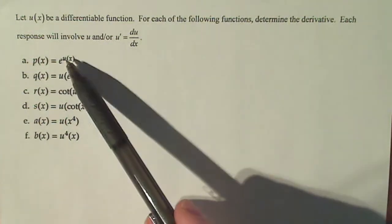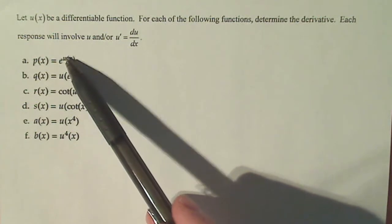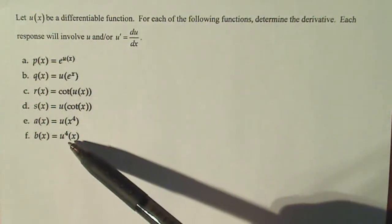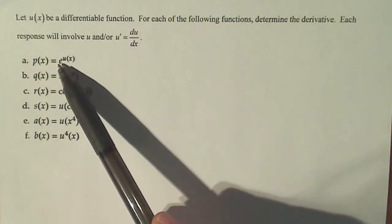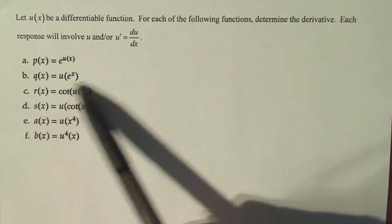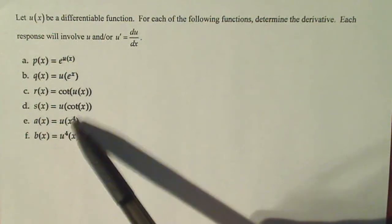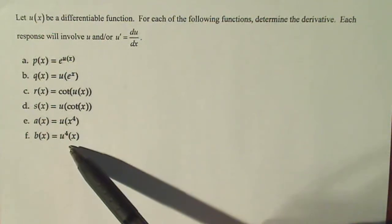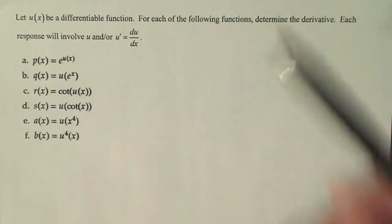So you can see u is either an interior function like it is here, here, and here. But the exterior functions, we have e to the x, we have cotangent, cotangent here, x to the fourth here. So it's just the chain rule over and over and over.